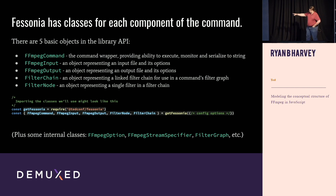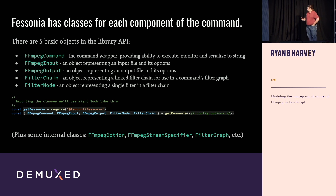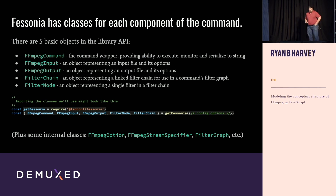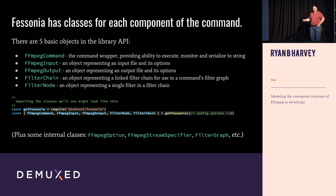To import these in Node, you can do something like this. We do accept config options — for example, if you want to give us a specific location of your FFmpeg installation. Normally, we just look on the path, so if it's on the path, it'll work. There are some internal classes if you want to help us build it, but otherwise you don't really have to worry about them.